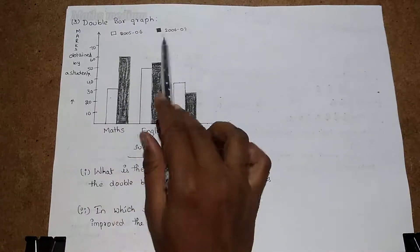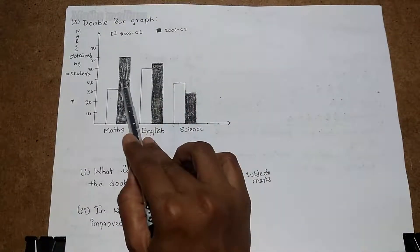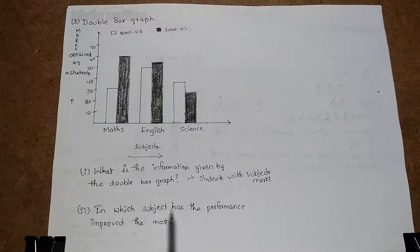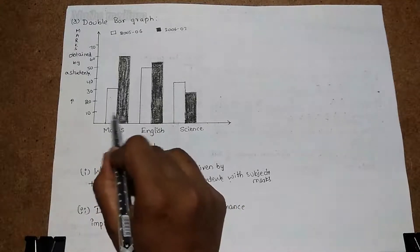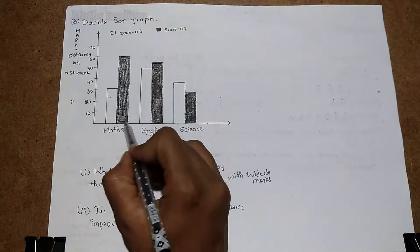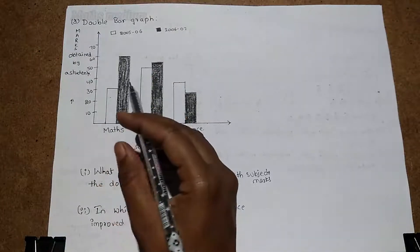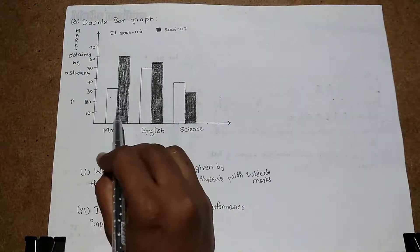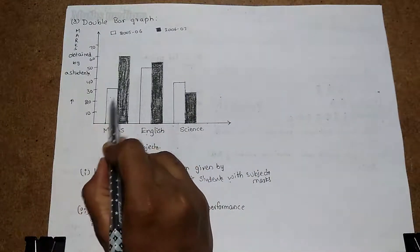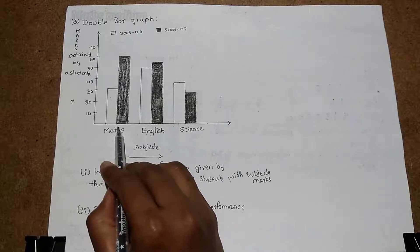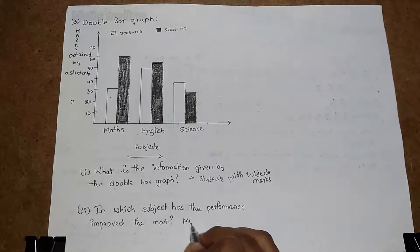Comparing the performance across subjects between 2005-2006 and 2006-2007, the question is: 'In which subject has the performance improved the most?' By comparing every subject across both academic years, we can see that maths showed the greatest improvement. So the answer is maths.